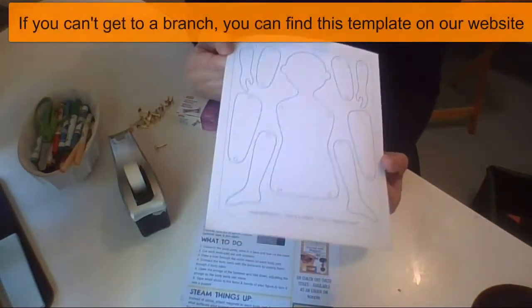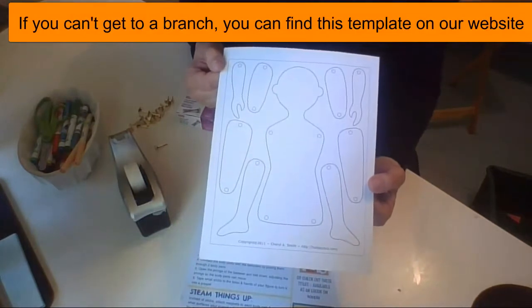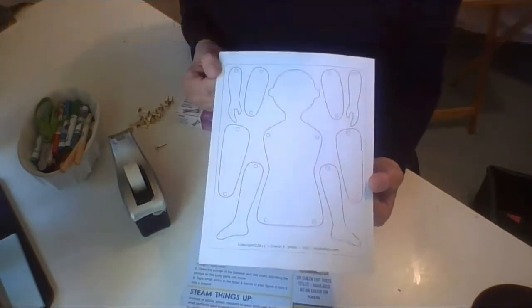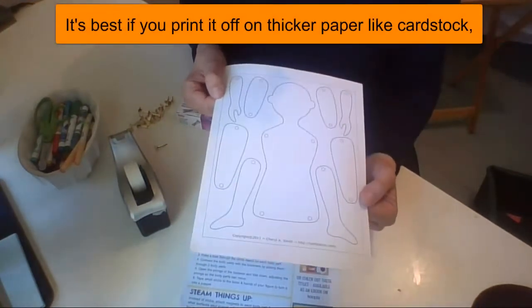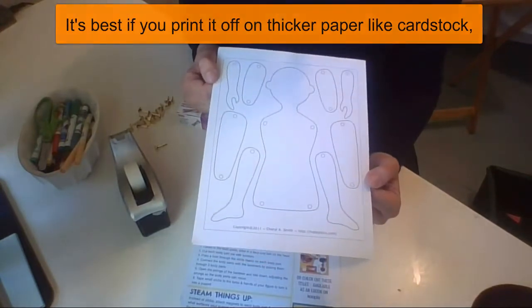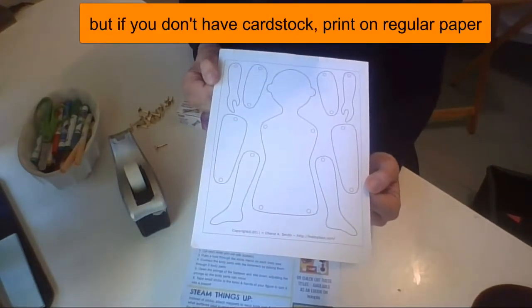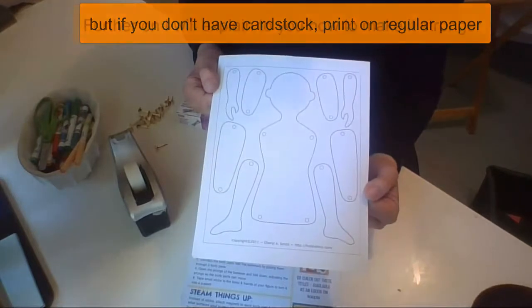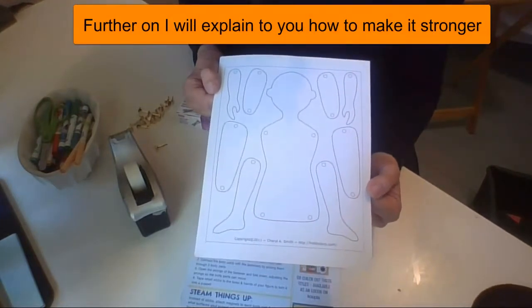If you can't get to a branch, we have this template available for download on our website. It's best if you print it off onto cardstock. But if you don't have cardstock, just print on regular copy paper and further on in the instructions I'll explain to you how you can make your puppet stronger.